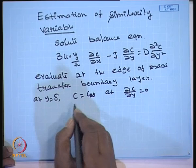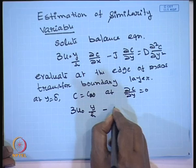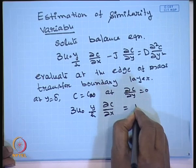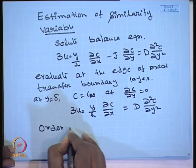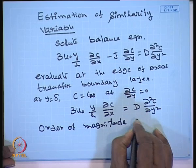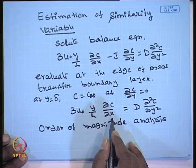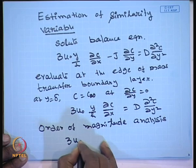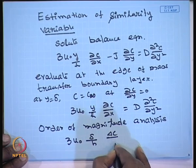Therefore, this equation at the edge of the boundary layer becomes 3u₀y/h · ∂c/∂x — the second term vanishes — and the term on the right-hand side remains. Now we do an order-of-magnitude analysis: we put the value of δ in terms of differences — y will be δ, 3u₀δ/h, Δc is a change in concentration, and Δx is x minus 0 since we assume a small distance from the channel entrance.